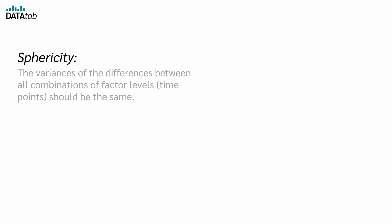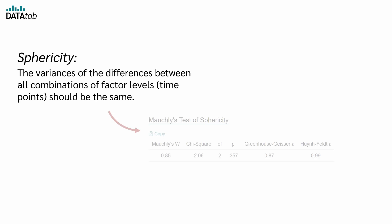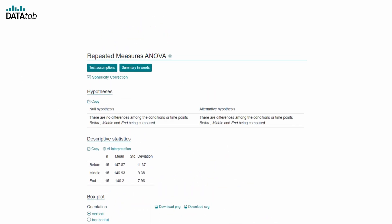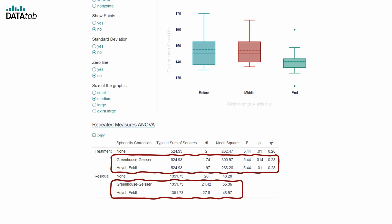Number two: sphericity. The variances of the differences between all combinations of factor levels or time points should be the same. This can be tested with Mauchly's test for sphericity. If the resulting p-value is greater than 0.05, we can assume that the variances are equal and the assumption is not violated. If the assumption is violated, adjustments such as Greenhouse-Geisser or Huynh-Feldt can be made.